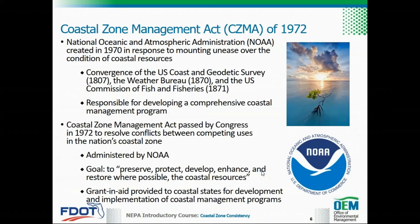In 1970, President Richard Nixon proposed the creation of the National Oceanic and Atmospheric Administration, or NOAA. This proposal was made in an attempt to respond to the mounting unease over the condition of coastal resources, as well as to streamline the environmental activities of the federal government. Thus, NOAA was formed as the convergence of three government agencies: the U.S. Coast Guard and Geodetic Survey, the Weather Bureau, and the U.S. Commission of Fish and Fisheries.